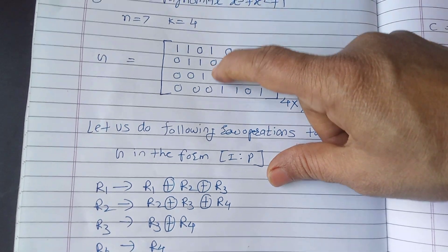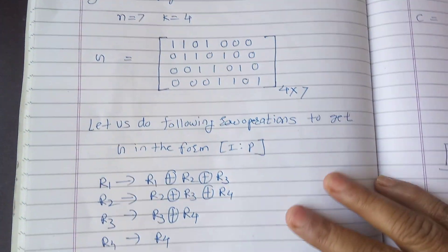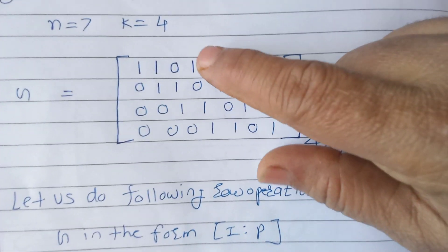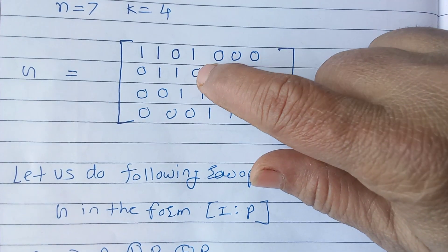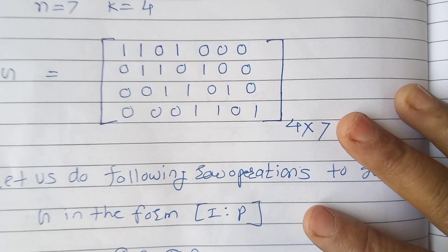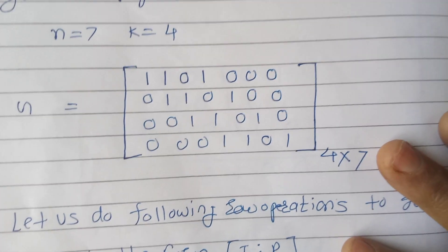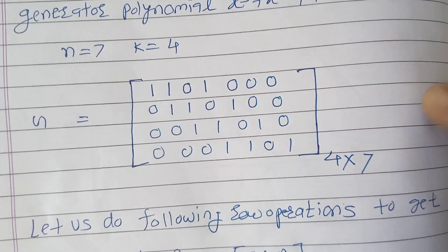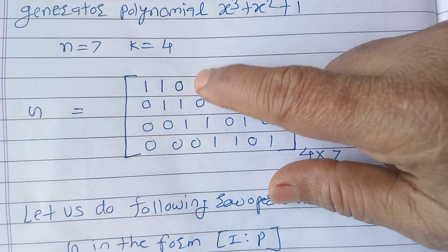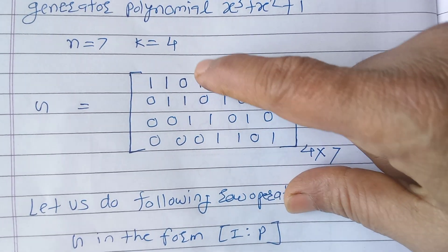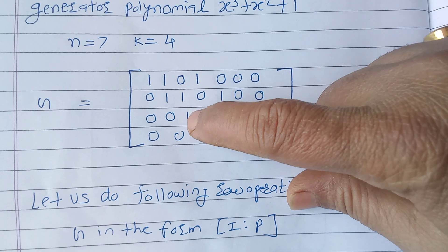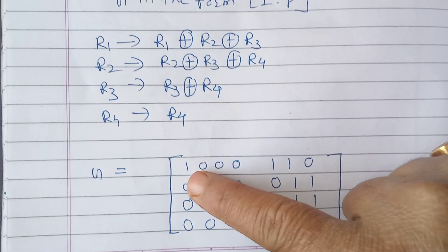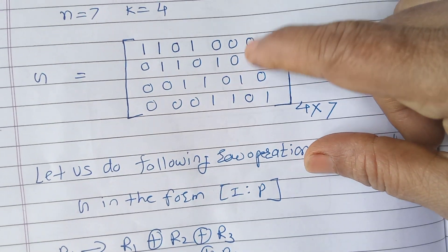We want the identity form for the four columns on one side. The first operation is R1 = R1+R2+R3. This addition is mod 2, or XOR: 1 XOR 1 = 0, 0 XOR 1 = 1, 1 XOR 0 = 1, and 0 XOR 0 = 0. So wherever there are an even number of ones, write 0; odd number of ones, write 1. Performing R1+R2+R3 gives the first row as 1 0 0 0.